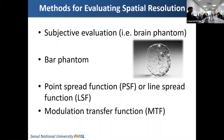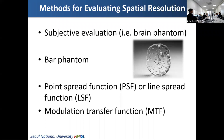Let me tell you about the methods for evaluating spatial resolution — how we can measure it. The easiest way would be subjective evaluation. If we read the image, we know whether it has good spatial resolution or not. For example, if we scan the same brain phantoms, we can subjectively assess how good the spatial resolution of our system is. Sometimes we use a specialized bar phantom with several bars of different spacing to assess spatial resolution.